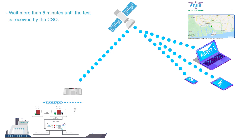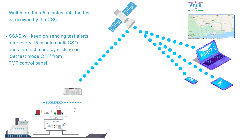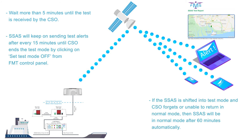Wait more than 5 minutes until the test is received by the CSO. SSAS will keep on sending test alerts after every 15 minutes until CSO ends the test mode by clicking on Set Test Mode Off from FMT Control Panel. If the SSAS is shifted into test mode and the CSO forgets or is unable to return to Normal Mode, then SSAS will be in Normal Mode after 60 minutes automatically.